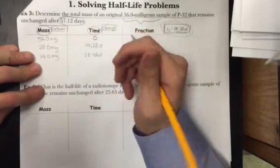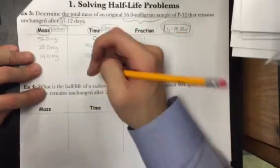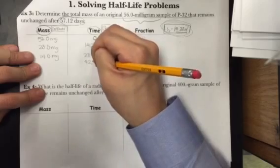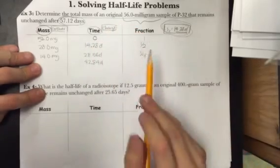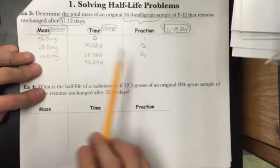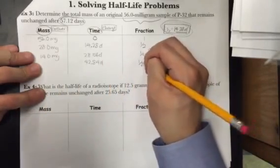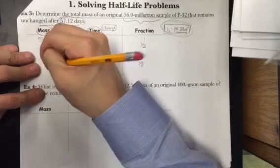If I let yet another half-life pass, another 14.28 days pass, giving me 42.84 days. Since yet another half-life passed, I have to divide the fraction and mass by half. So if I do half of one-fourth, I get one-eighth. And if I do half of 14, I get 7.0 milligrams.